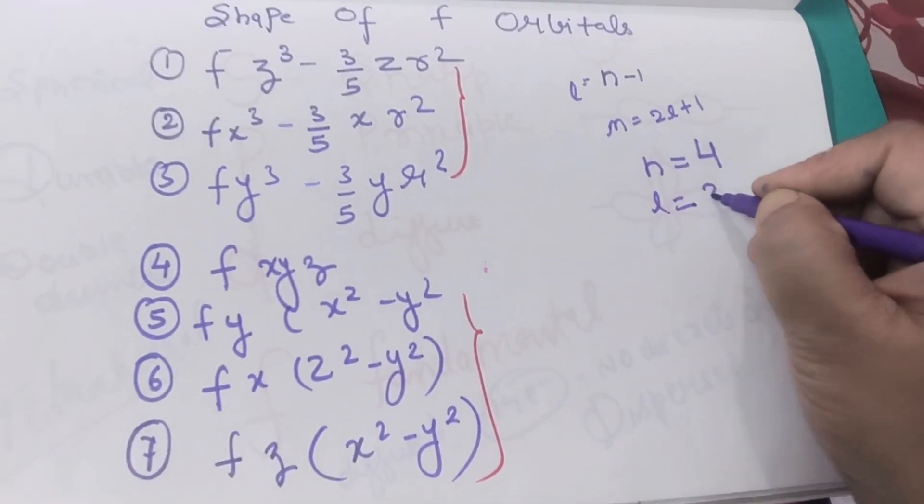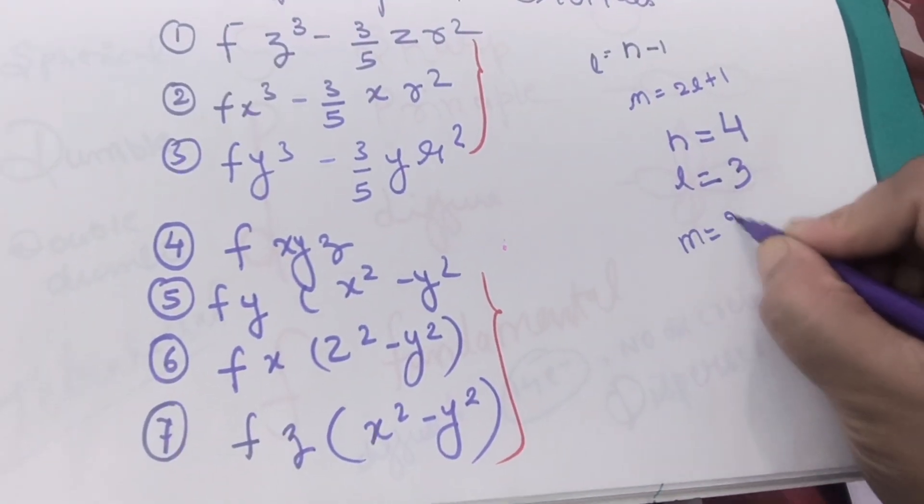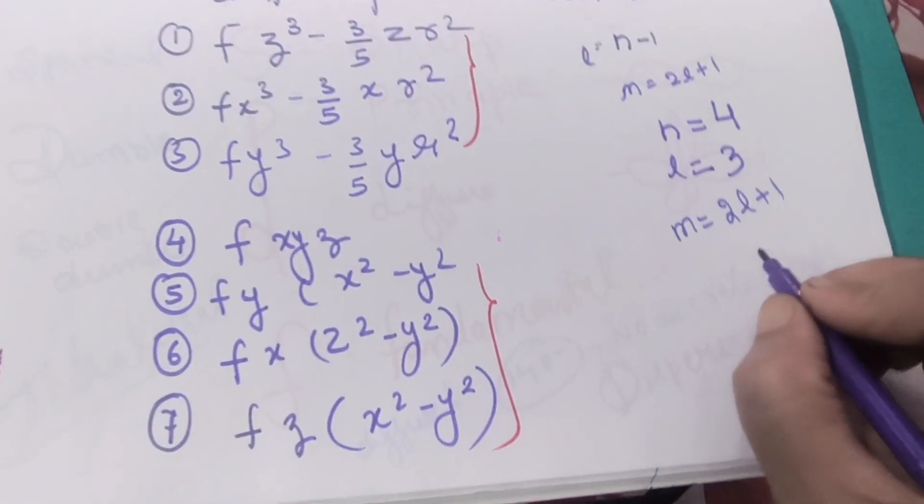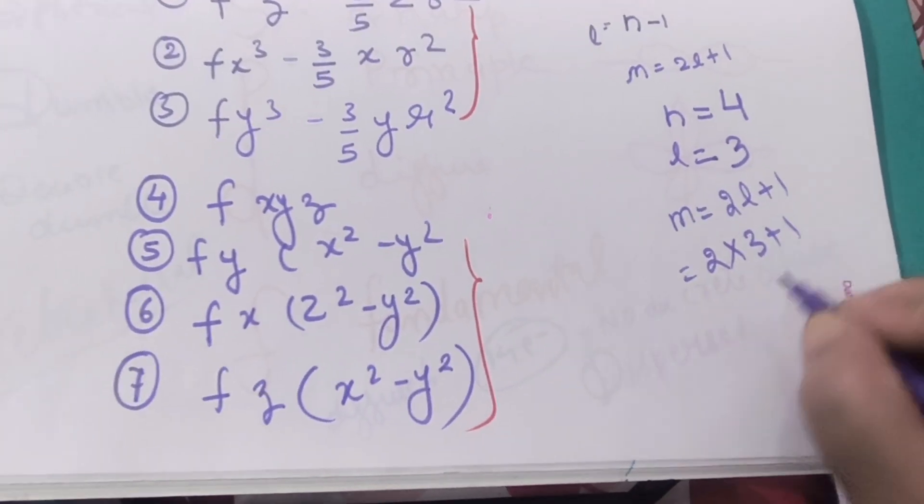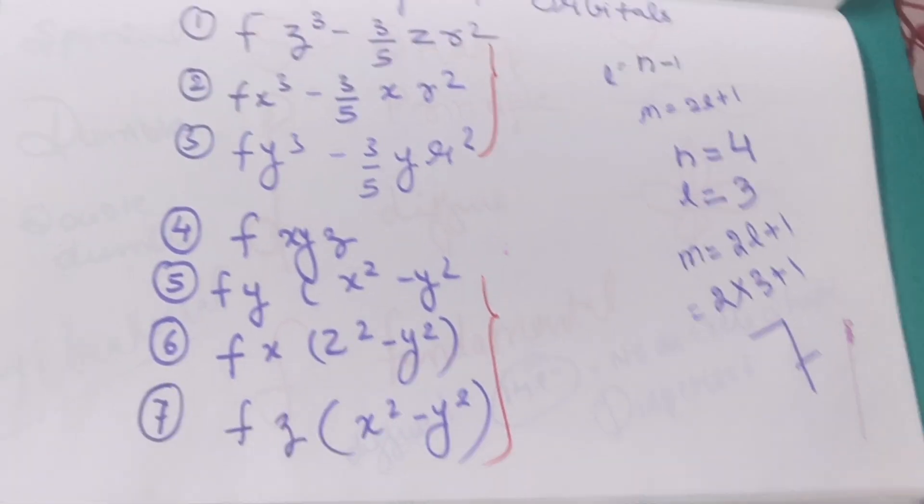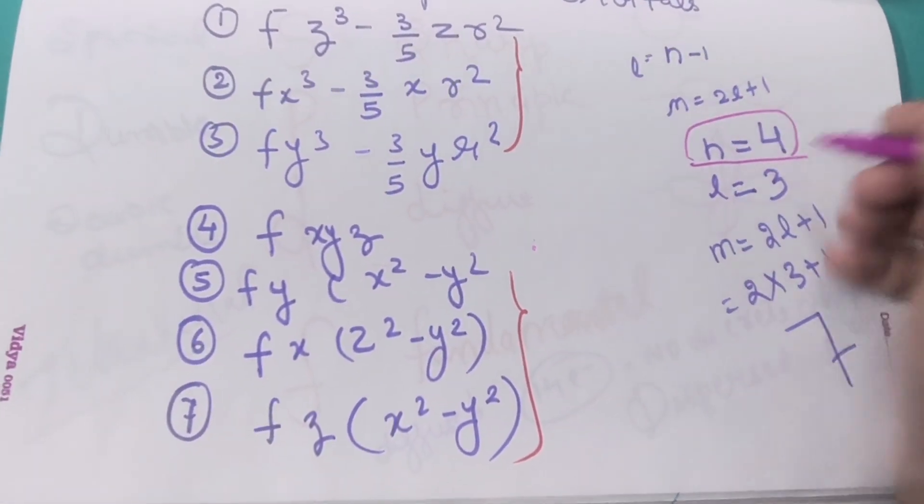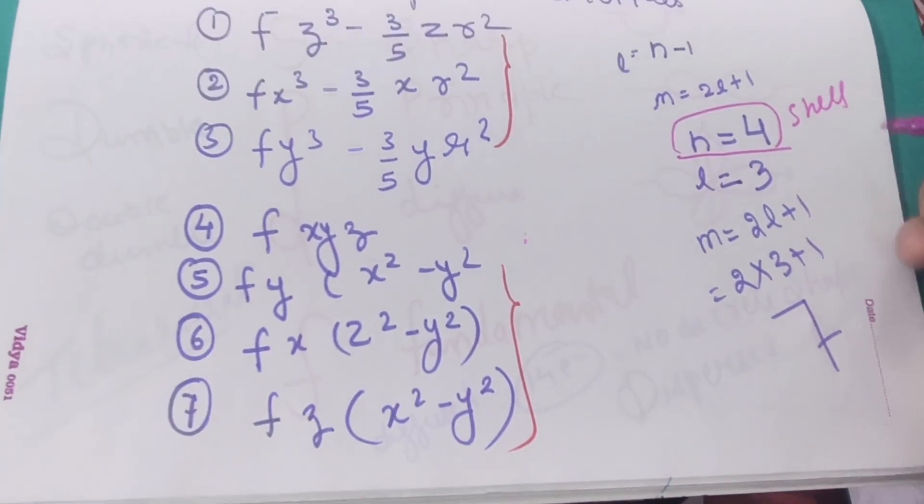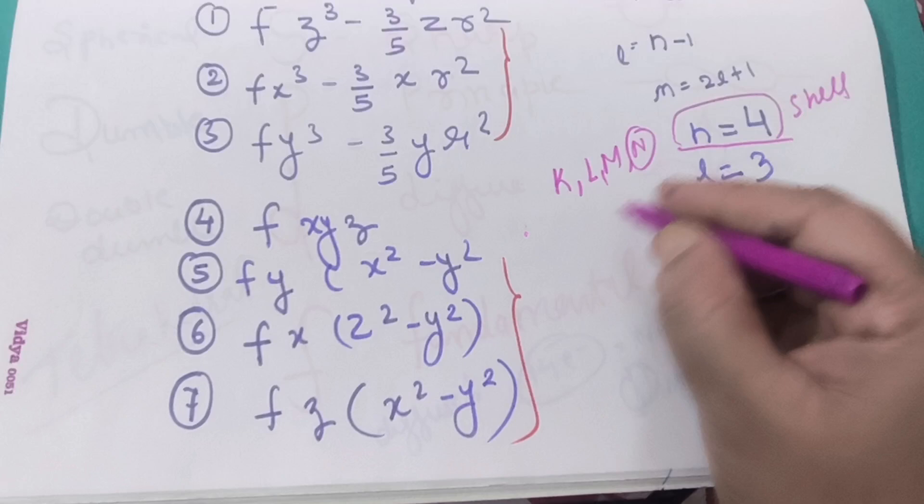If our n is equals to 4, we know that it comes to our fourth shell. When n is equals to 4, l is equals to what? l is equals to 3, n minus 1. So what is m? m is equals to 2l plus 1. When we put here 2 into 3 plus 1, so 2 times 3 is 6 plus 1, you will get 7.